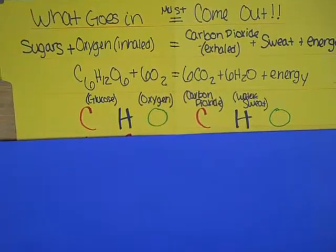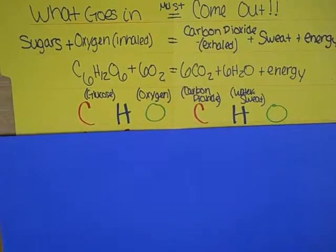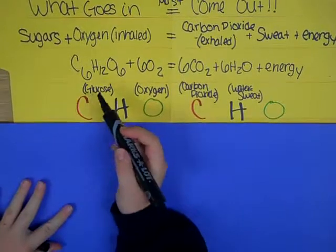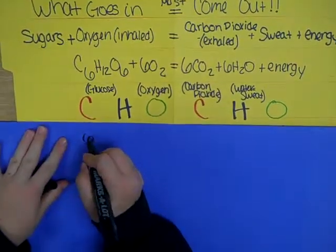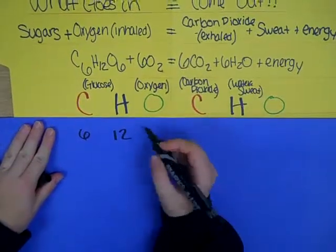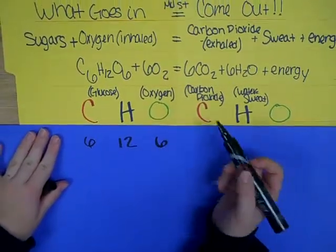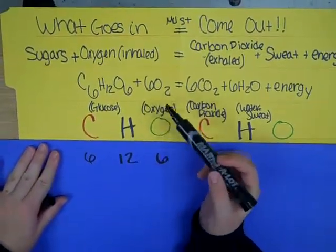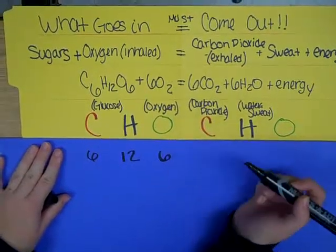In order to balance this equation, you see that there are 6 carbons, 12 hydrogens, and 6 oxygens. For the 6O2, that's really 6 times 2,